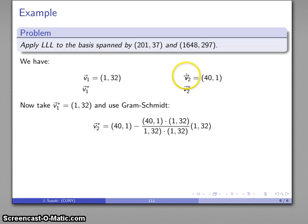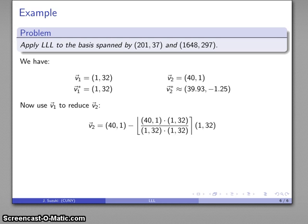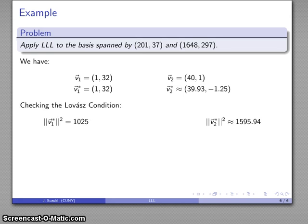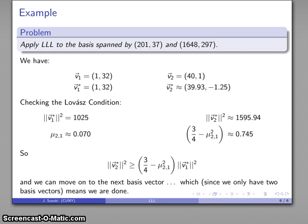We take our first Gram-Schmidt basis vector to be the first vector and apply Gram-Schmidt reduction again. That gives us our two Gram-Schmidt basis vectors. Using our first lattice vector to reduce our second lattice vector gives us 41, and V2 remains 41. Checking the Lovász condition, the magnitude squared is greater than (3/4 - μ²) times this magnitude squared, so the condition is satisfied. We could move on to the next basis vector, but there are only two basis vectors, so we're done. This corresponds to our reasonably orthogonal set of basis vectors for the lattice.